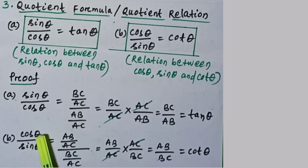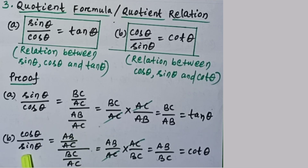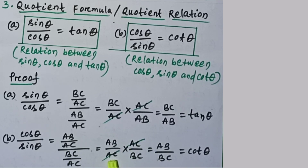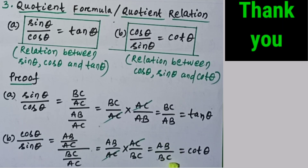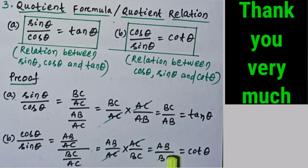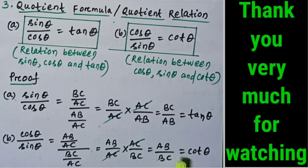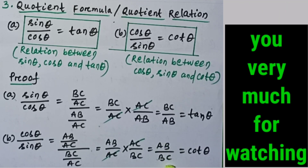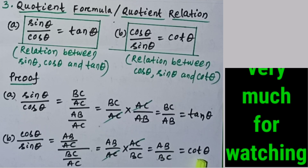The second quotient formula is cos θ / sin θ = cot θ. Cos θ = AB/AC and sin θ = BC/AC. So cos θ / sin θ = (AB/AC) × (AC/BC). AC cancels, leaving AB/BC. We know AB/BC is cot θ. So cos θ / sin θ = cot θ.